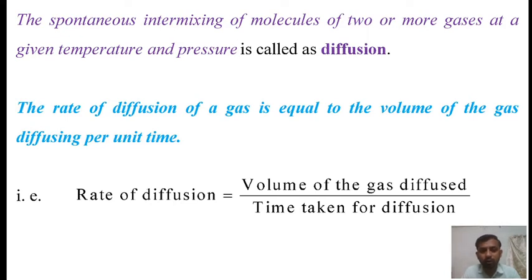What do you mean by the rate of diffusion? The rate of diffusion of a gas is equal to the volume of the gas diffusing per unit time, which is mathematically expressed as: rate of diffusion equals the ratio of volume of the gas diffused and time taken for diffusion.